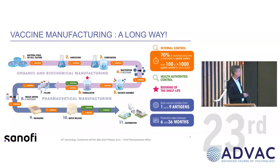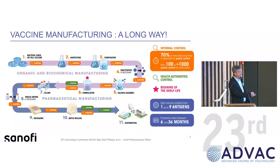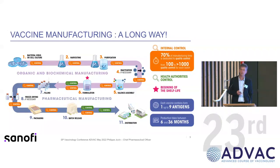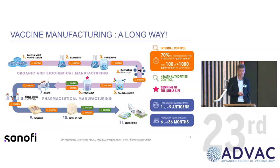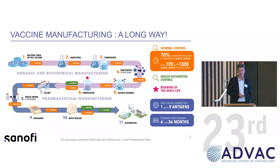Then there is batch release. In France, this is completed at minimum by pharmacists who review all data gathered along the process — manufacturing data, quality control test results — checking compliance with the approved dossier, pharmacopoeias, and specifications. If all conditions are met, the vaccine will be released; if not, the batch will be refused. There is also an independent review of the batch record and tests by health authorities — a double and redundant batch release for vaccines.